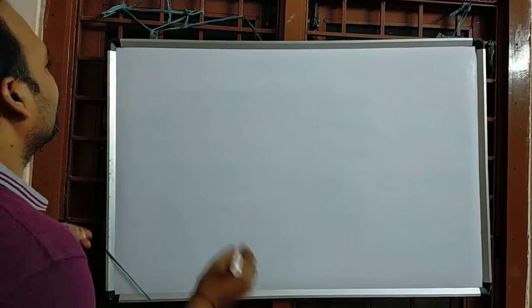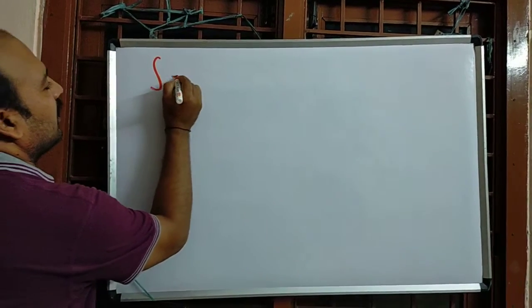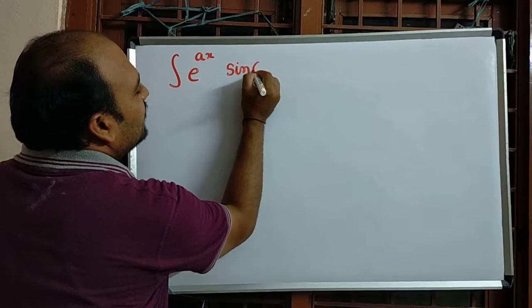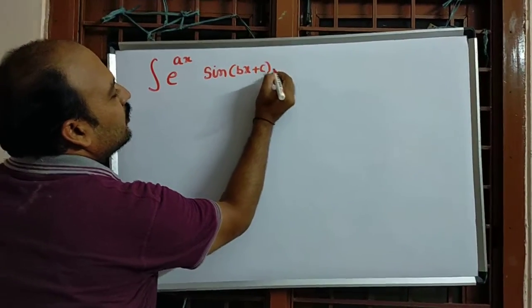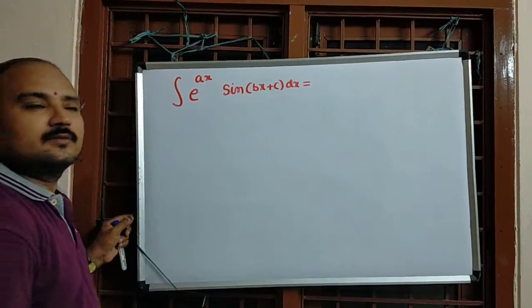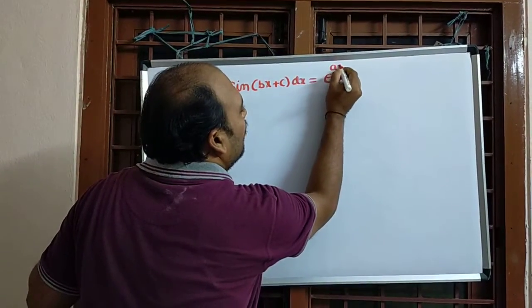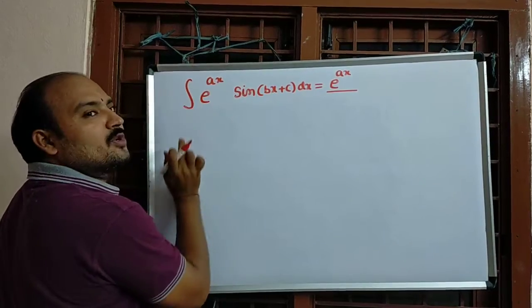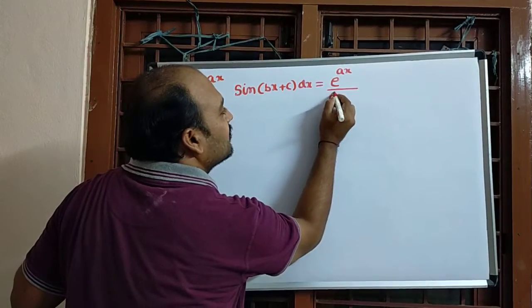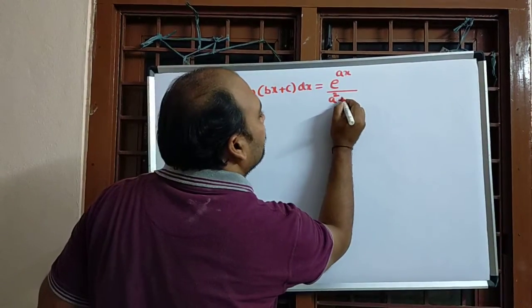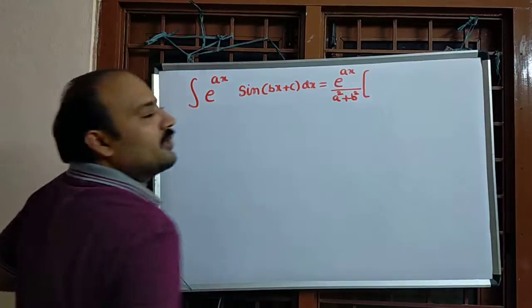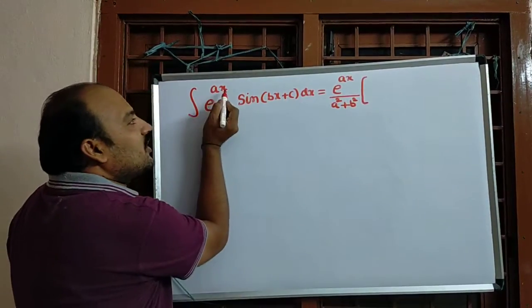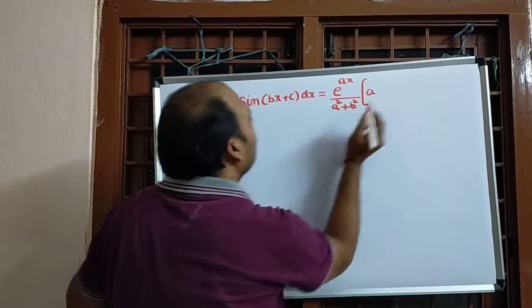The integral of e^(ax) · sin(bx + c) dx equals e^(ax) divided by the sum of the squares of the x-coefficients — that is a² + b² — in both the exponential function and the trigonometric function.